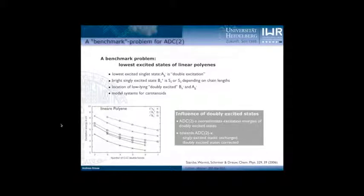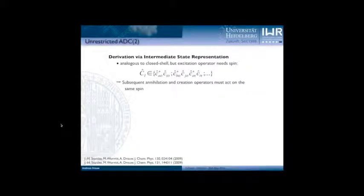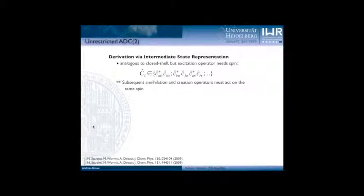Having the intermediate state representation at hand, we can use it to also derive unrestricted equations for ADC. This was before the ISR existed not possible, because no open-shell Green's function was available. Using the ISR, if you want to apply the excitation operator to your ground state wave function, you have to make sure the corresponding annihilation and creation operators act on the same spin manifold — being both alpha or both beta. If you then use this excitation operator and follow the same route — constructing an orthogonal basis set and representing the shifted Hamiltonian — you arrive at the unrestricted schemes.